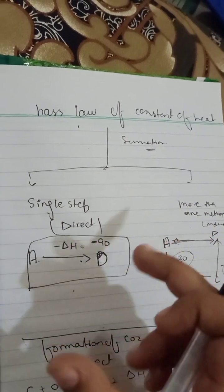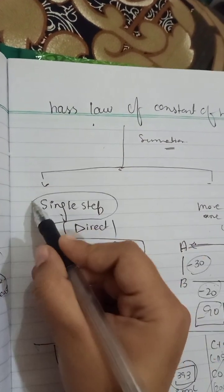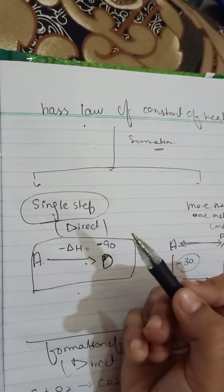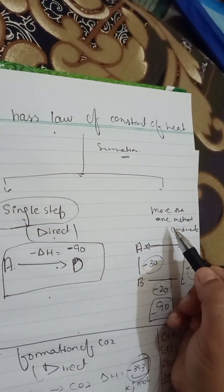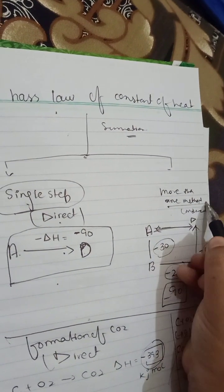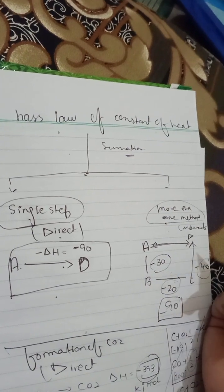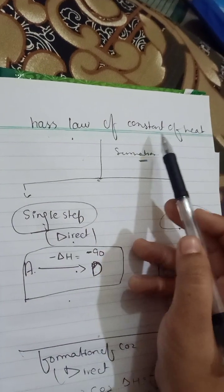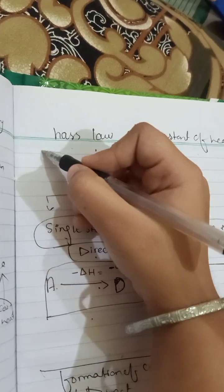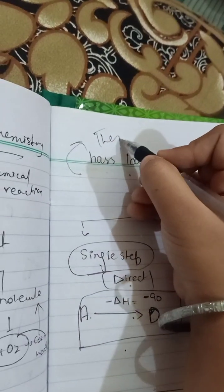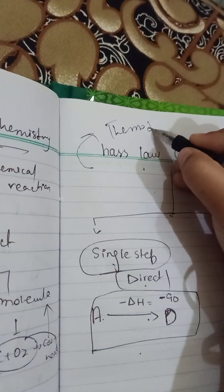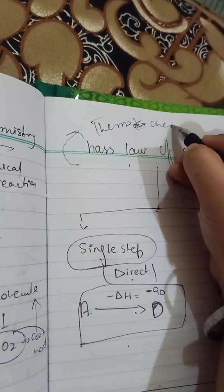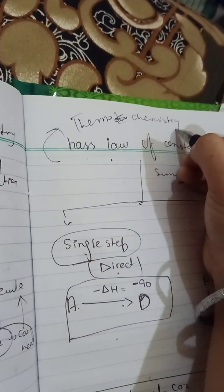So this was Hess's law: the product formation is the same but there will be various steps. The step which is completed in a single step, that is direct. And the method which is completed in various steps or different steps or more than one step, that is indirect. So this was about Hess's law of constant heat, which is the law of thermochemistry.